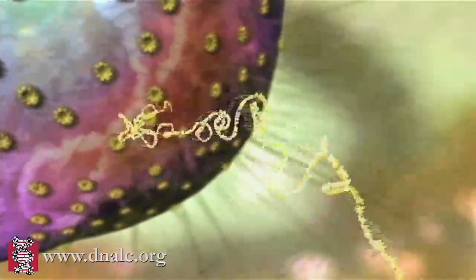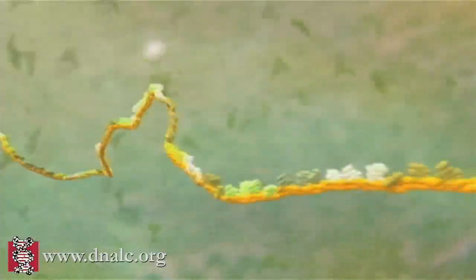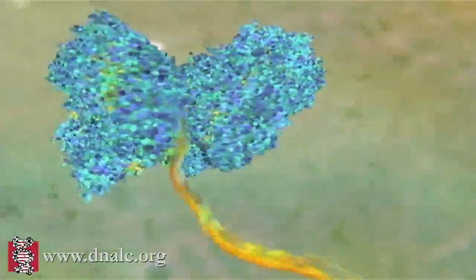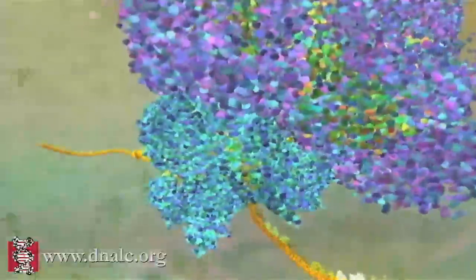Then, in a dazzling display of choreography, all the components of a molecular machine lock together around the RNA to form a miniature factory called a ribosome.